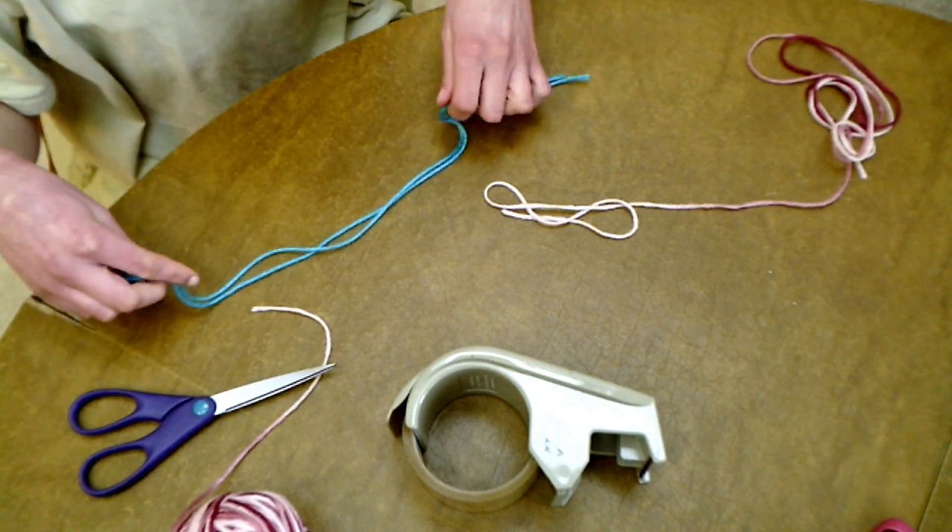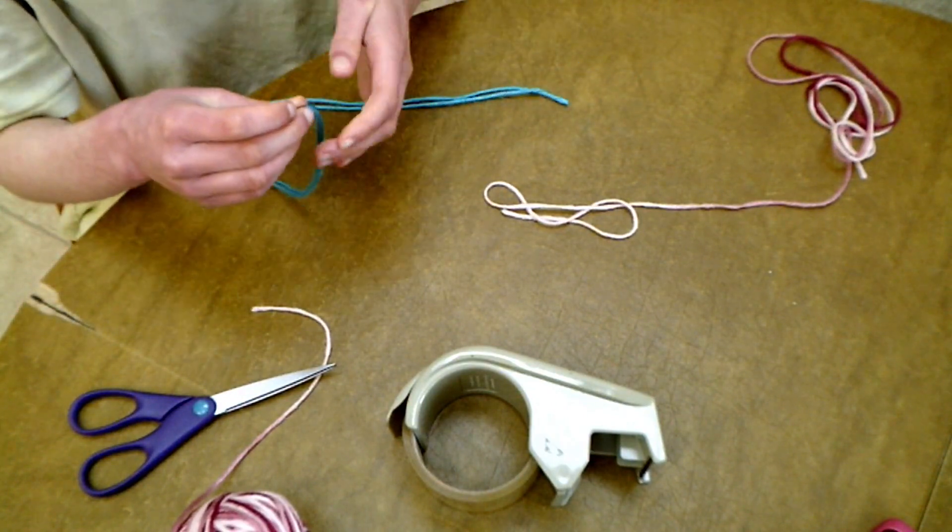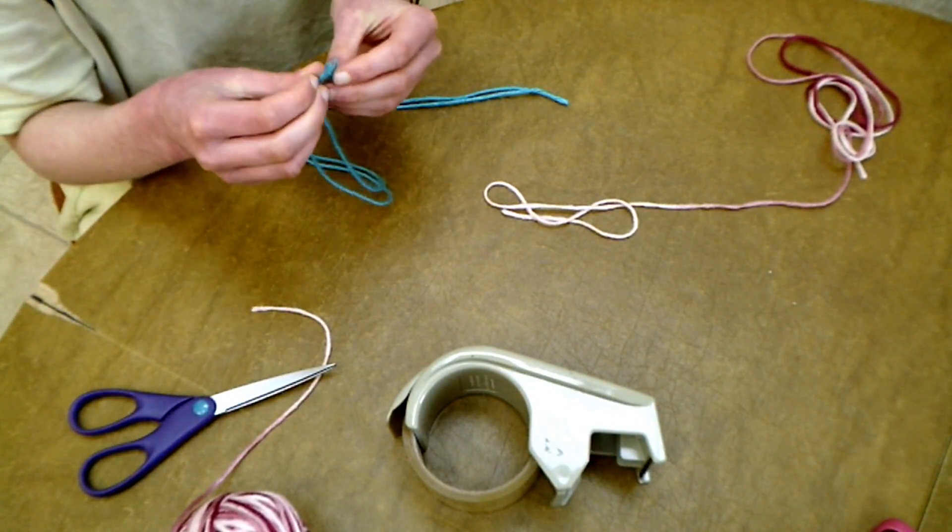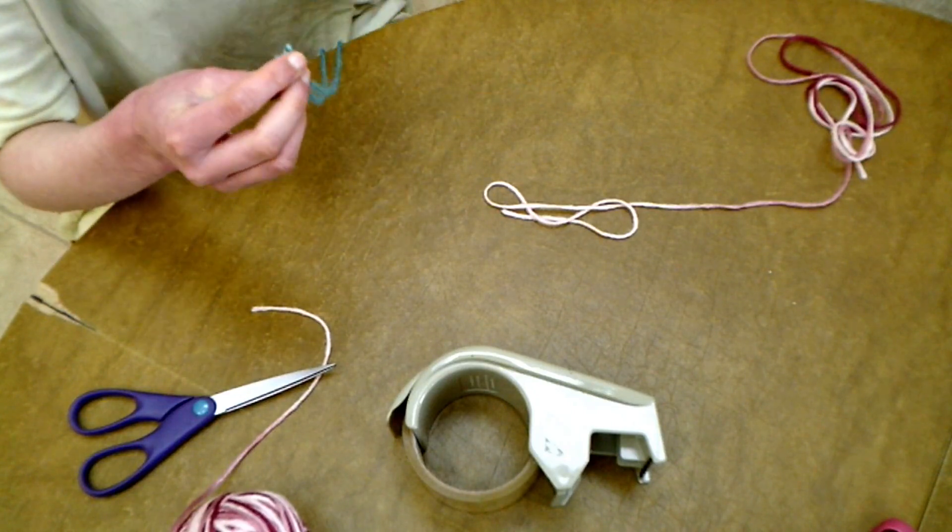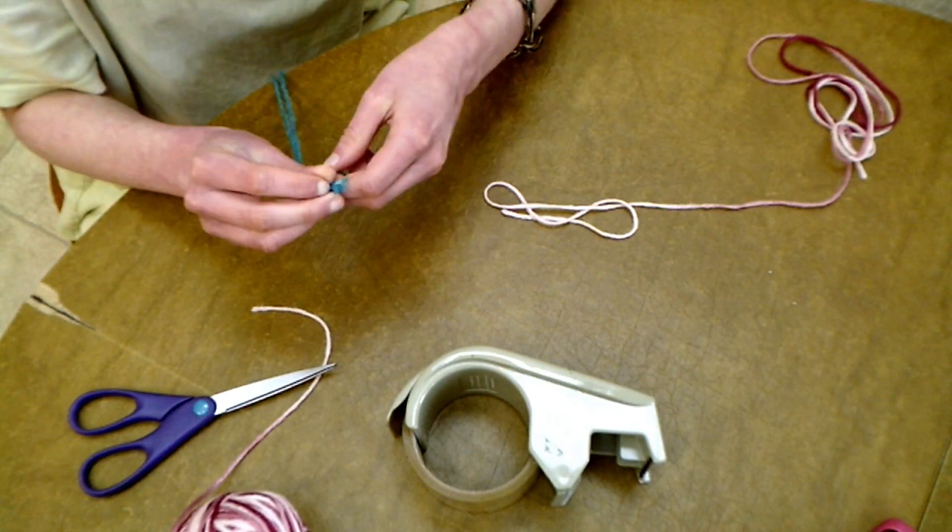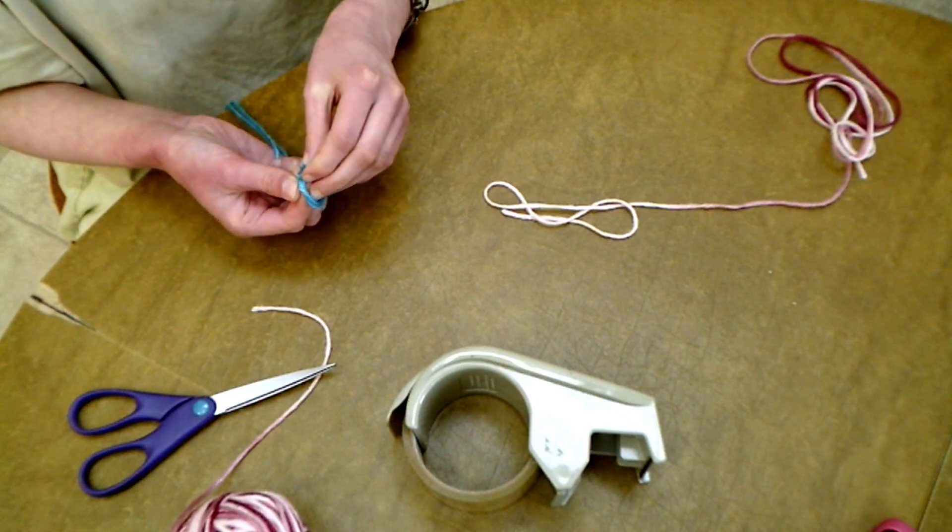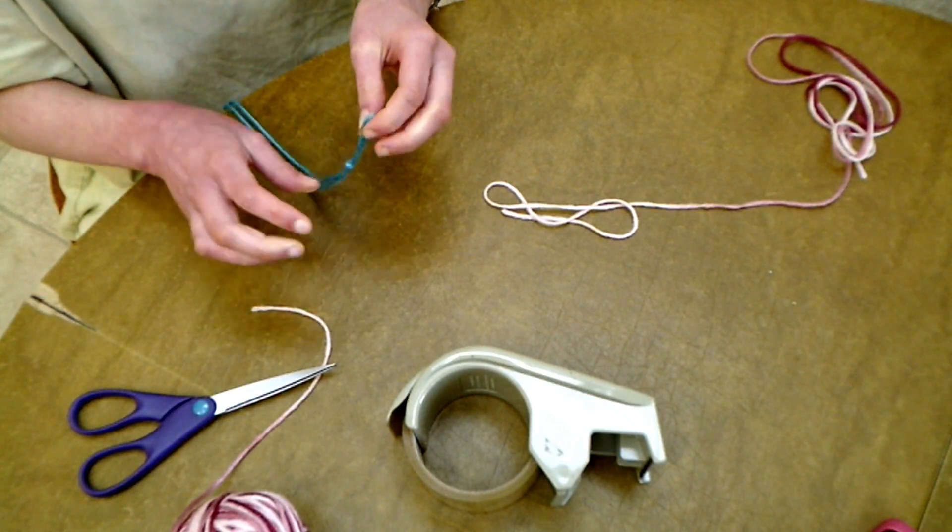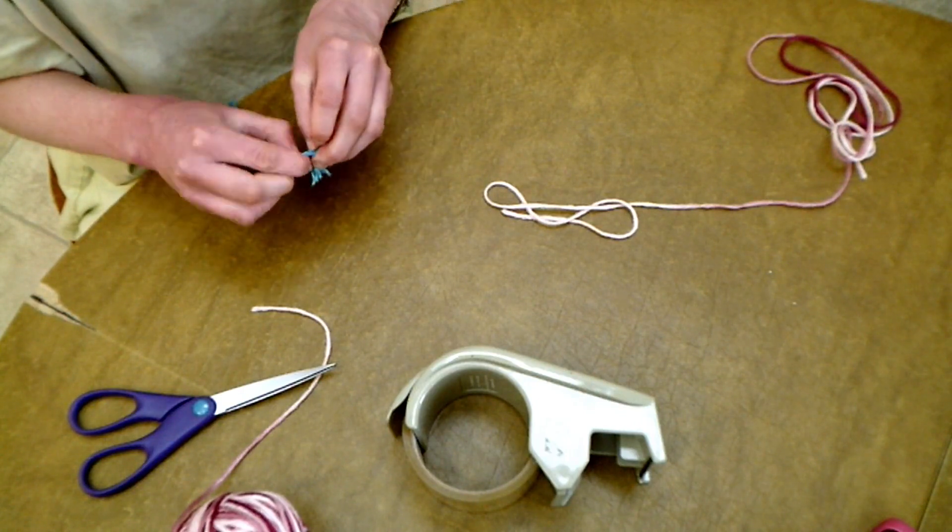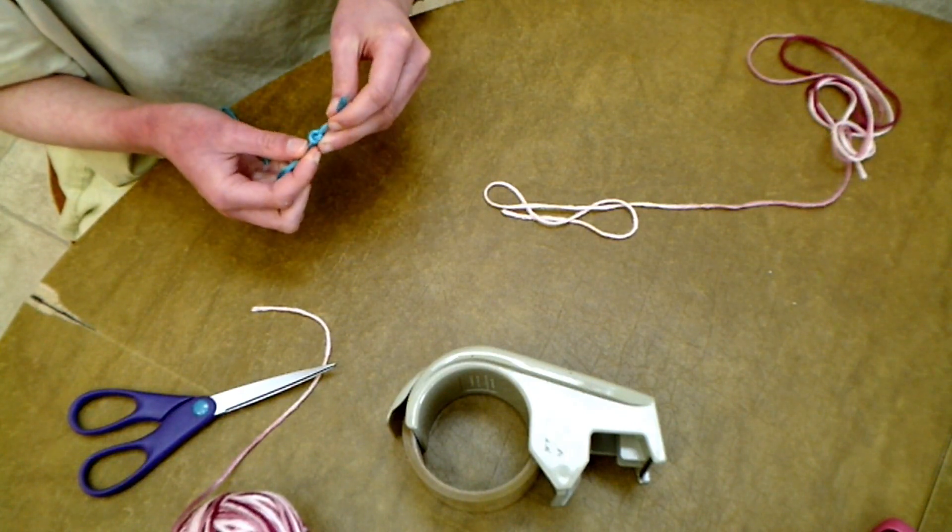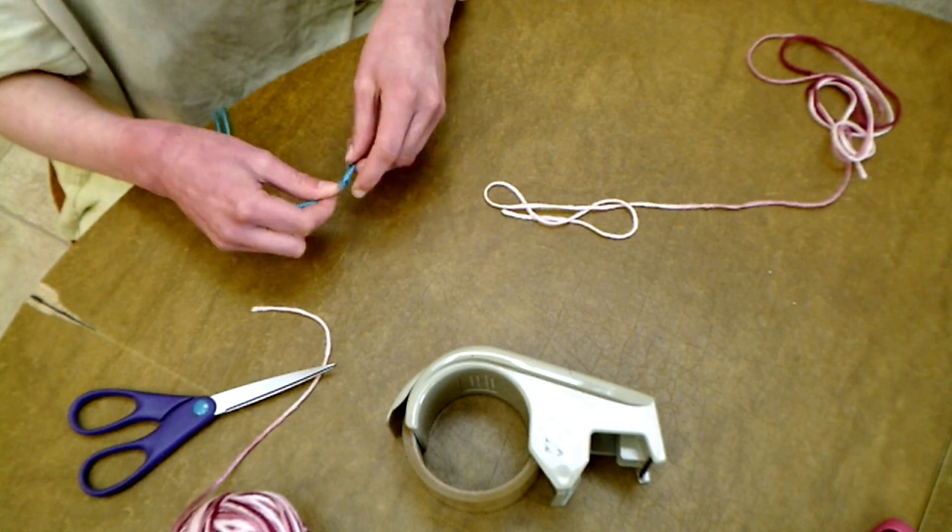Now, when you take your two blue pieces, you want to tie the end of them together. So, wrap it around your finger, tuck the ends under. And do that twice. Just like that.